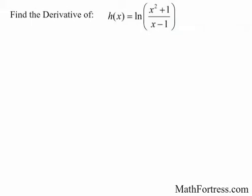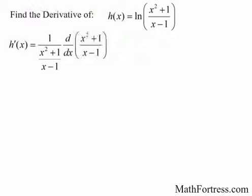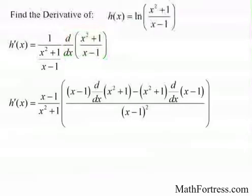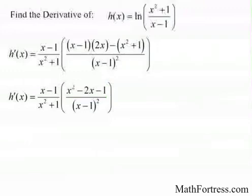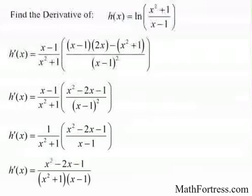Find the derivative of h of x equals the natural log of x squared plus 1 over x minus 1. The outer function is the natural log and the inner function is (x squared plus 1) over (x minus 1). Applying the chain rule and then the quotient rule for the inner function's derivative, we collect like terms in the numerator, cancel an (x minus 1) term, and the final derivative is equal to the quantity x squared minus 2x minus 1 over the quantity (x squared plus 1) times (x minus 1).